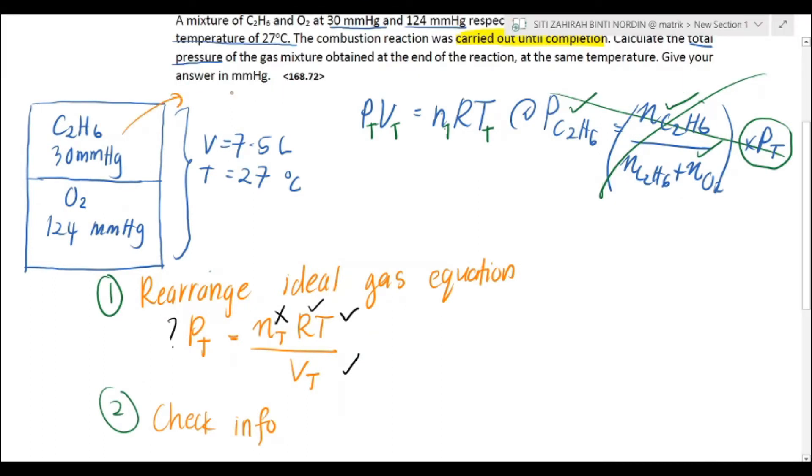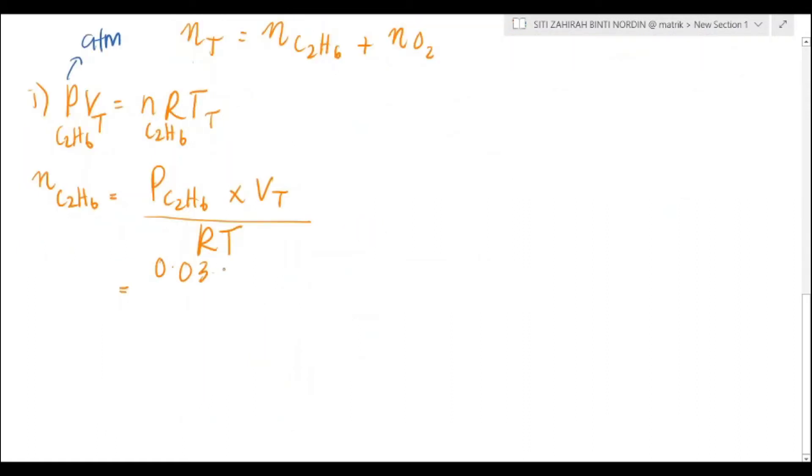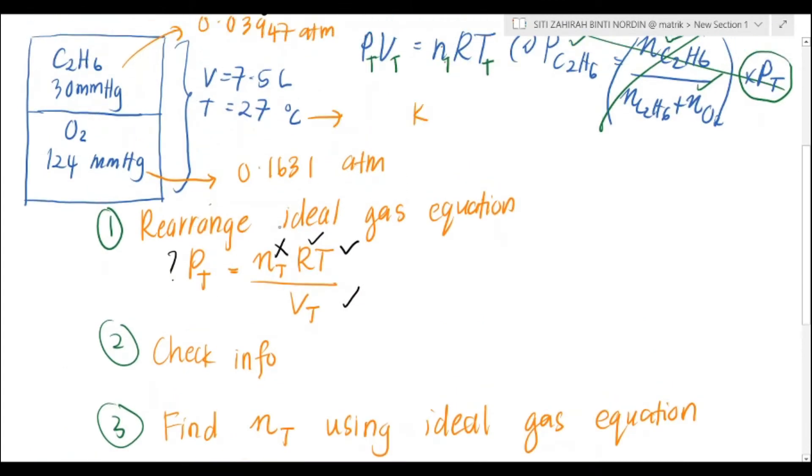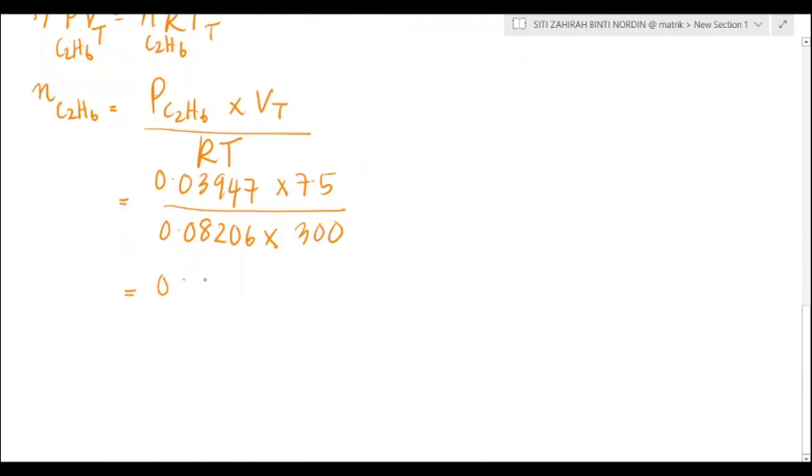That would be 0.03947 atm. And the pressure of O2 would be 0.1631 atm. So, 0.03947 times 7.5 divided by 0.08206 times temperature. Convert it to Kelvin, so you've got 300 Kelvin. Your mol would be 0.012024 mol.